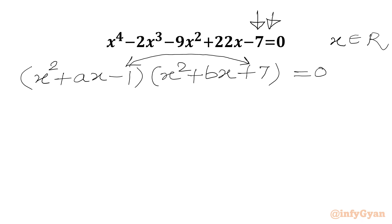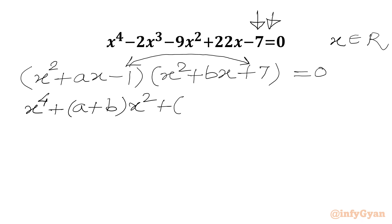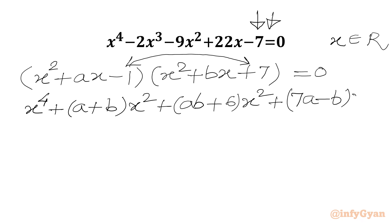Now we will expand our LHS. x² times x² gives x⁴. Then we collect the coefficient of x³, which will be (a + b). Then the coefficient of x² is (ab + 6). Then the coefficient of x is (7a - b), giving us (7a - b)x - 7 = 0.